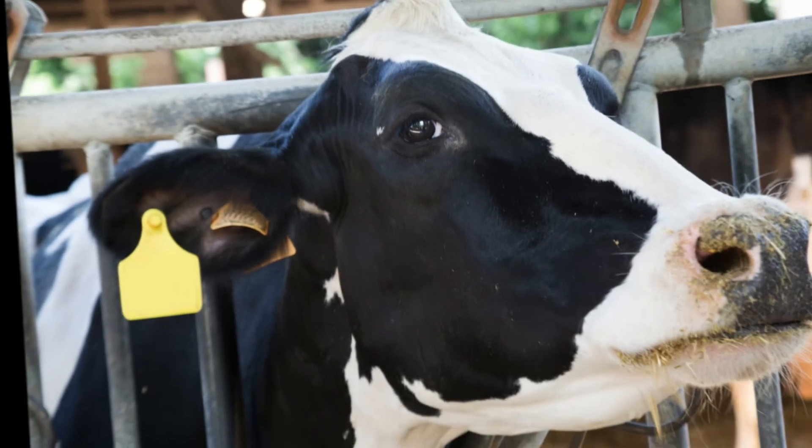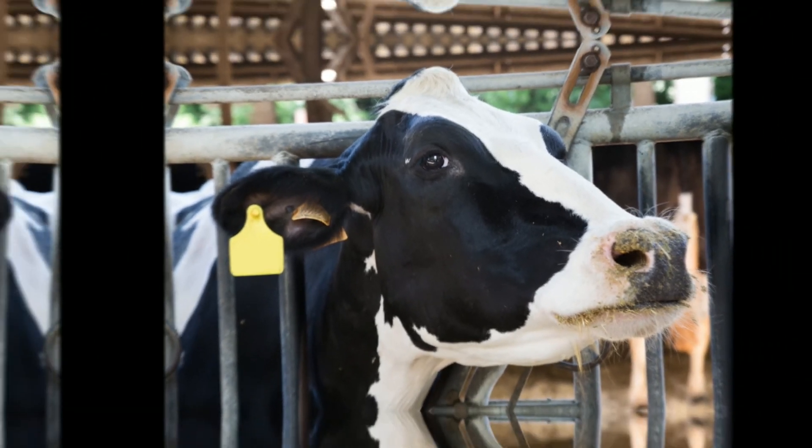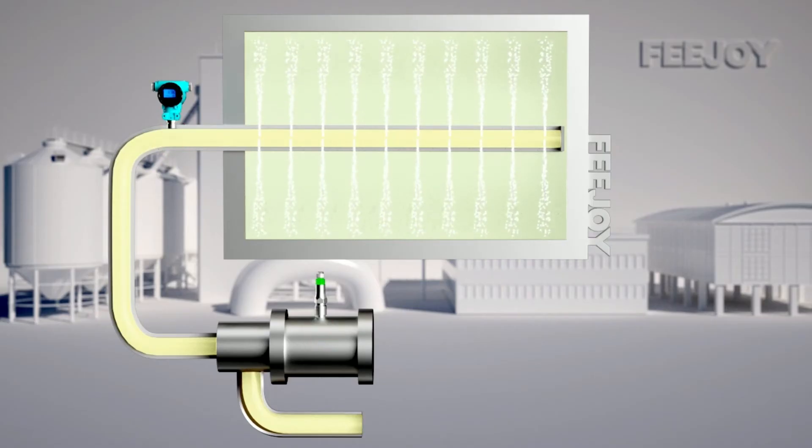In order to better homogenize the raw milk, a standard pressure transmitter is generally used to monitor the pressure in the homogenizer, and a compact pressure transmitter is used to monitor the pressure of the hydraulic system.